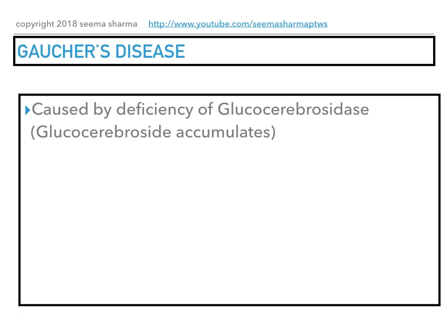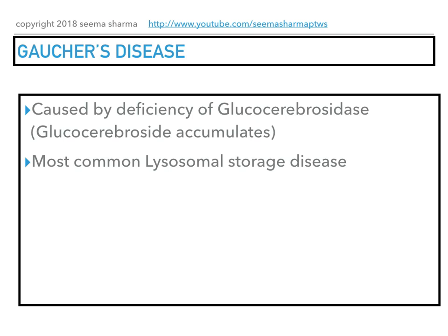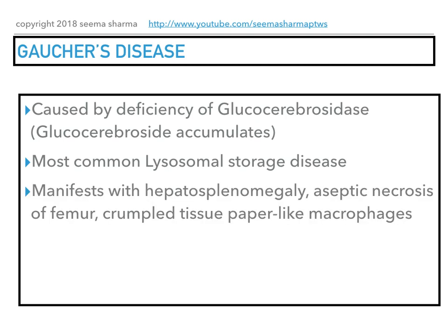Gaucher's disease is caused by deficiency of glucocerebrosidase, and glucocerebroside accumulates. It is the most common lysosomal storage disease. The clinical presentation is hepatosplenomegaly, aseptic necrosis of the femur, and crumpled tissue paper-like macrophages called Gaucher cells.